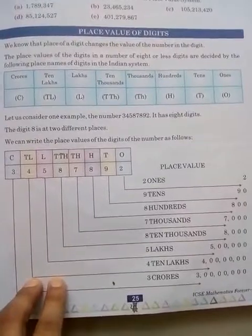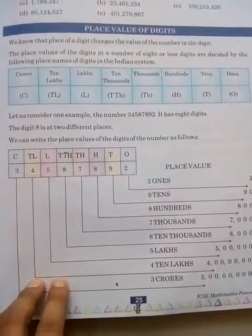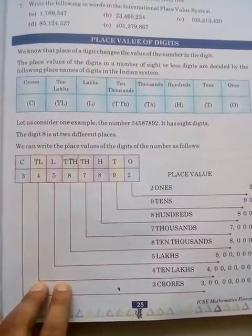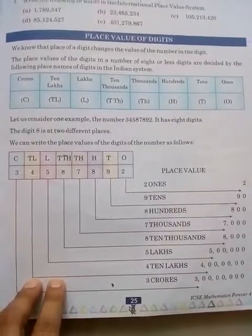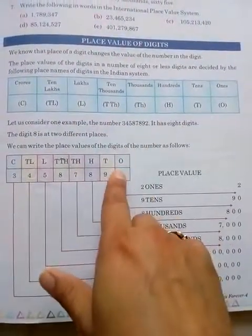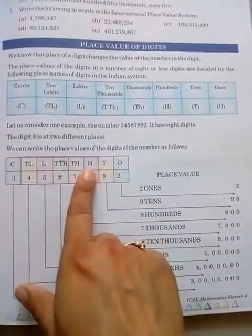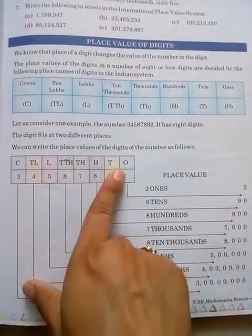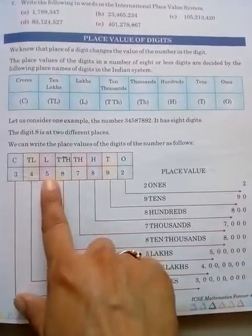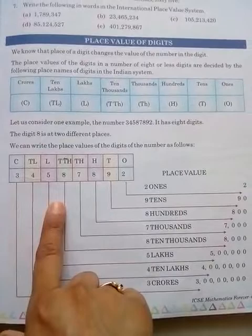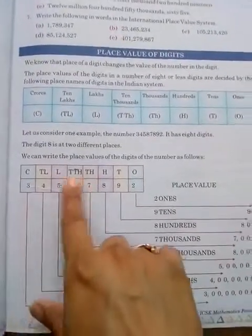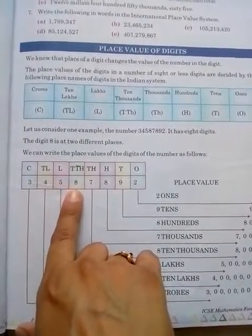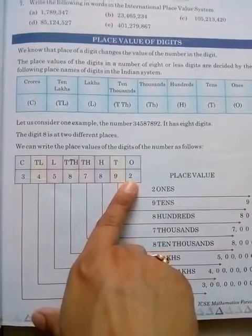As I told you earlier, if we are writing the number name very properly and we know that, I told you to write the places over every digit so that it may make it easier for you to write the number name. The same procedure — just write the places over every digit so that you can write the expanded form or place value very clearly. See, the number name of that given number is 3 crore 45 lakh 87,892.